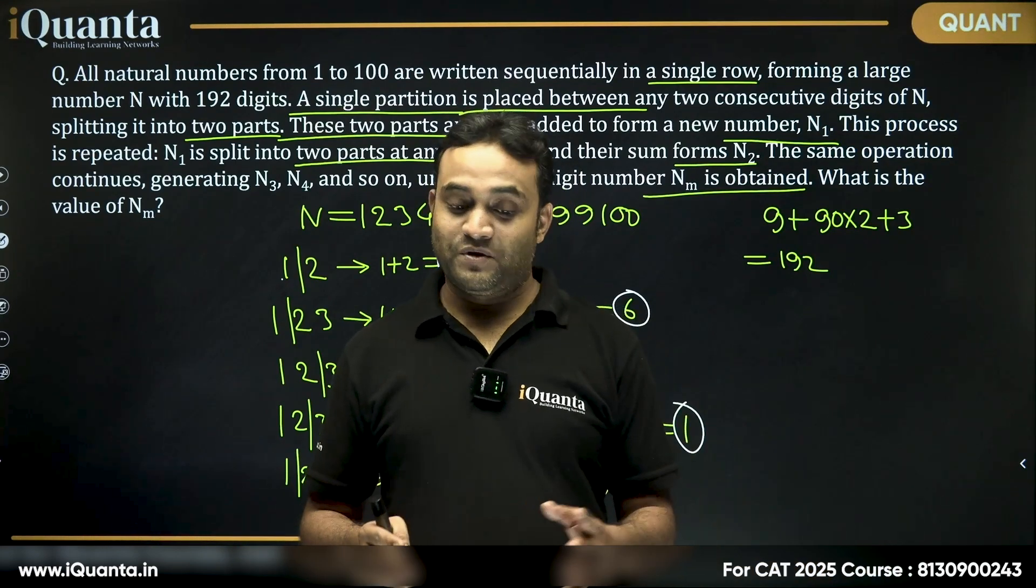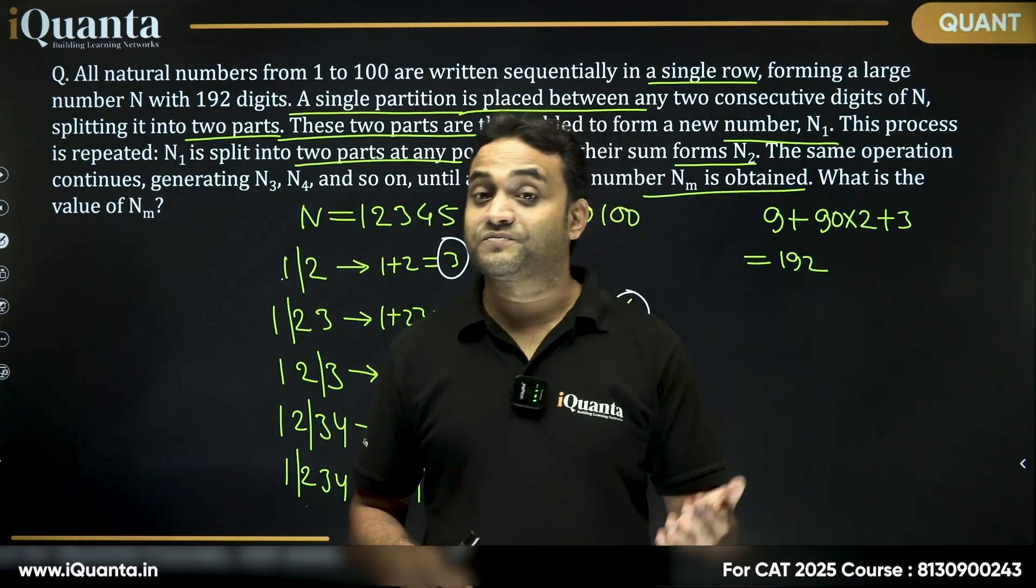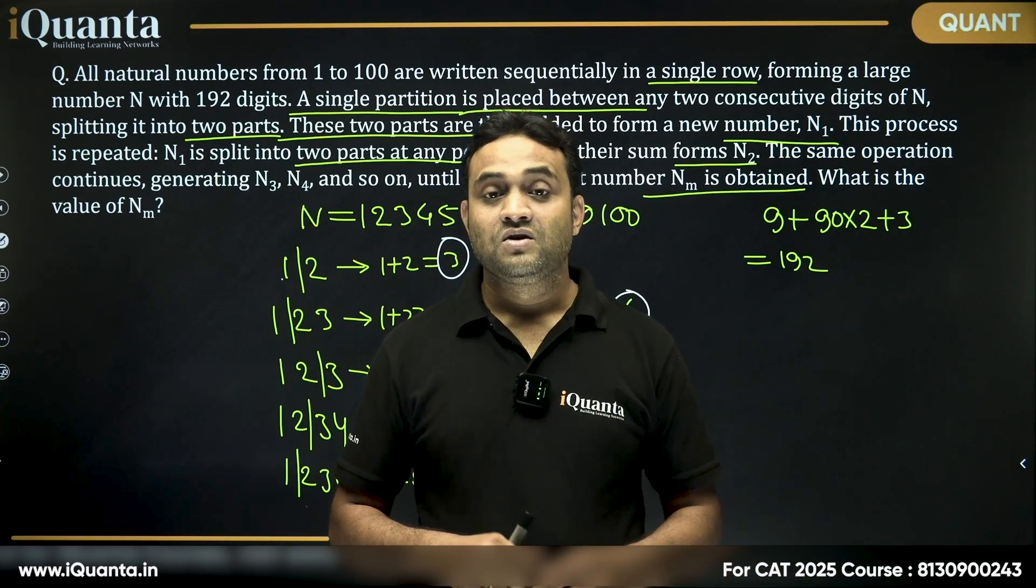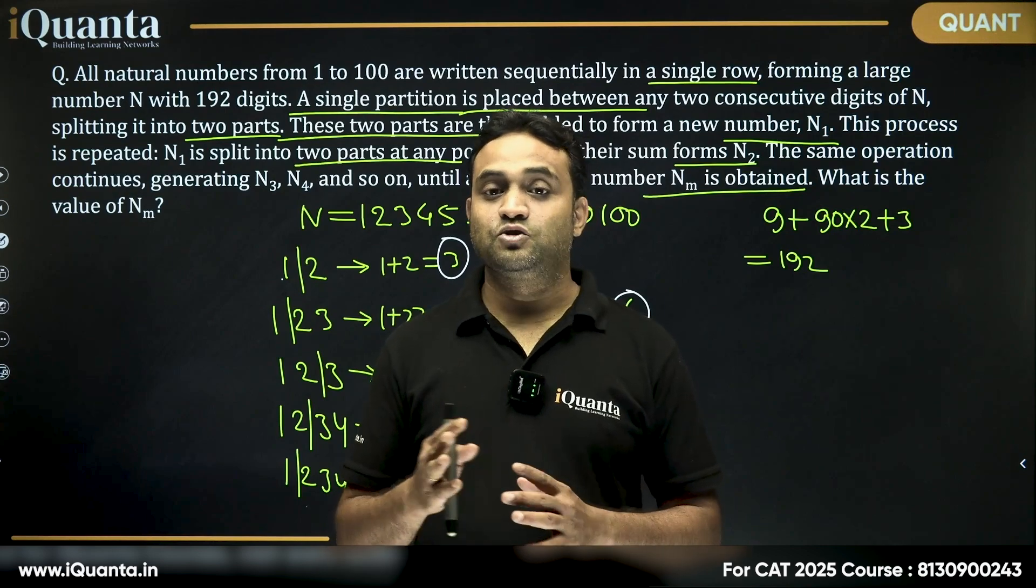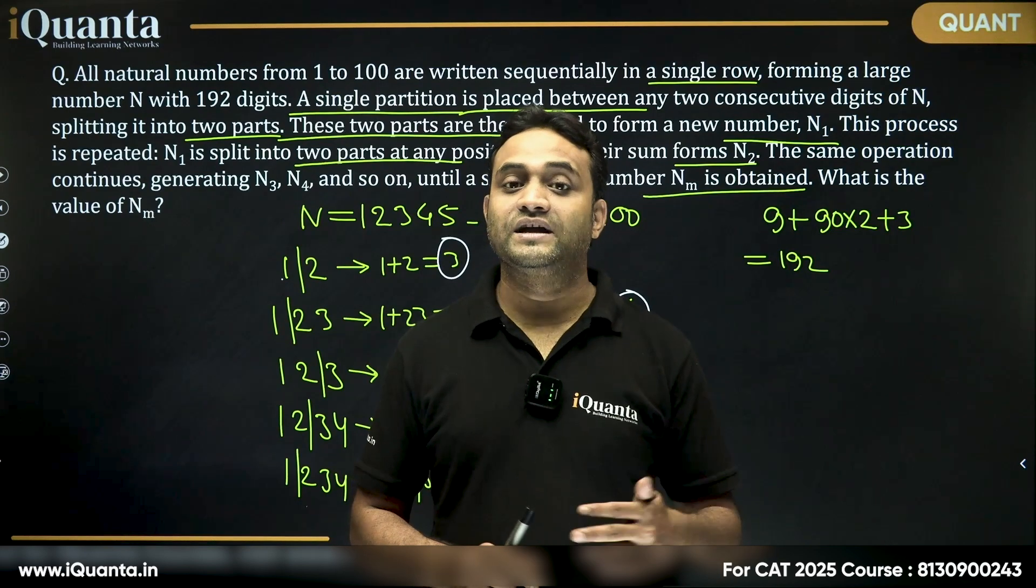Interesting, right? For example, 23, what is the remainder when 23 is divided by 9? Remainder is 5. What is 2 plus 3? It is 5. 101, what is the sum of the digits? 1 plus 0 plus 1, it is 2. What is the remainder when 101 is divided by 9? Again, the remainder is 2.